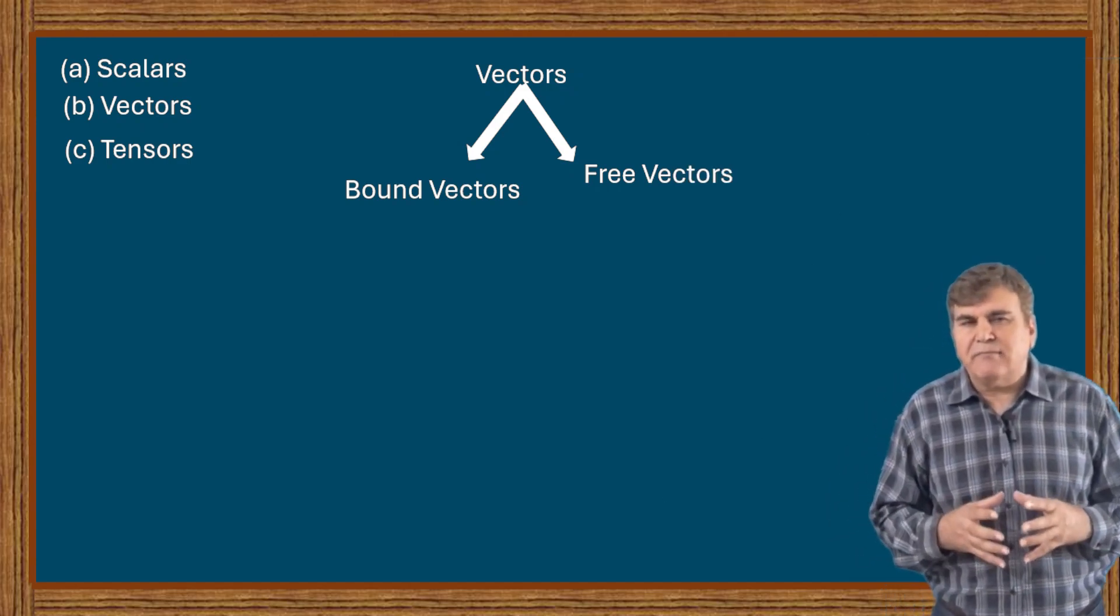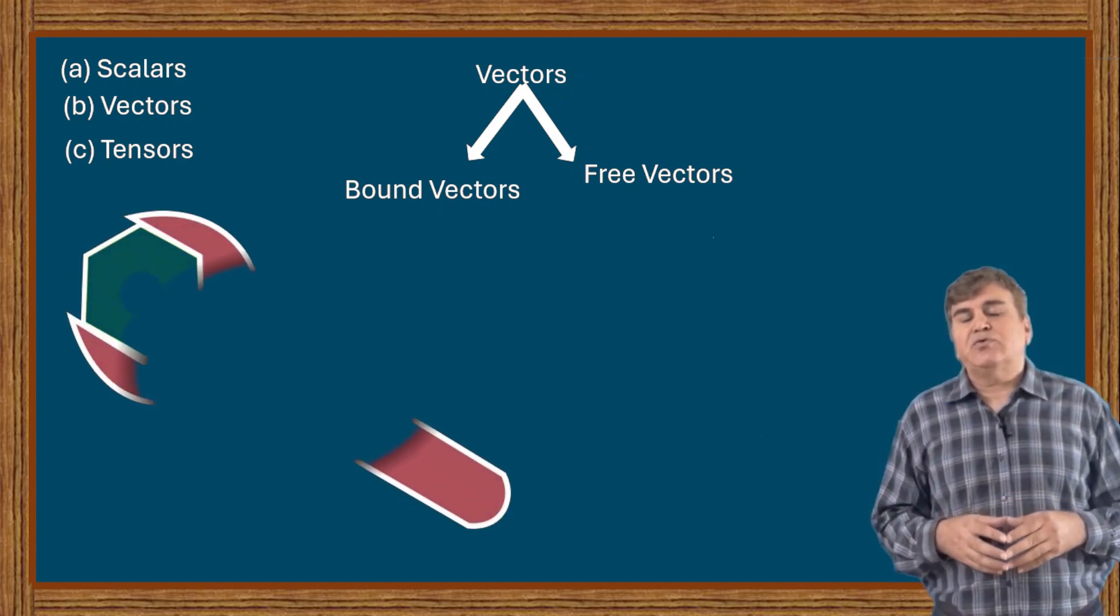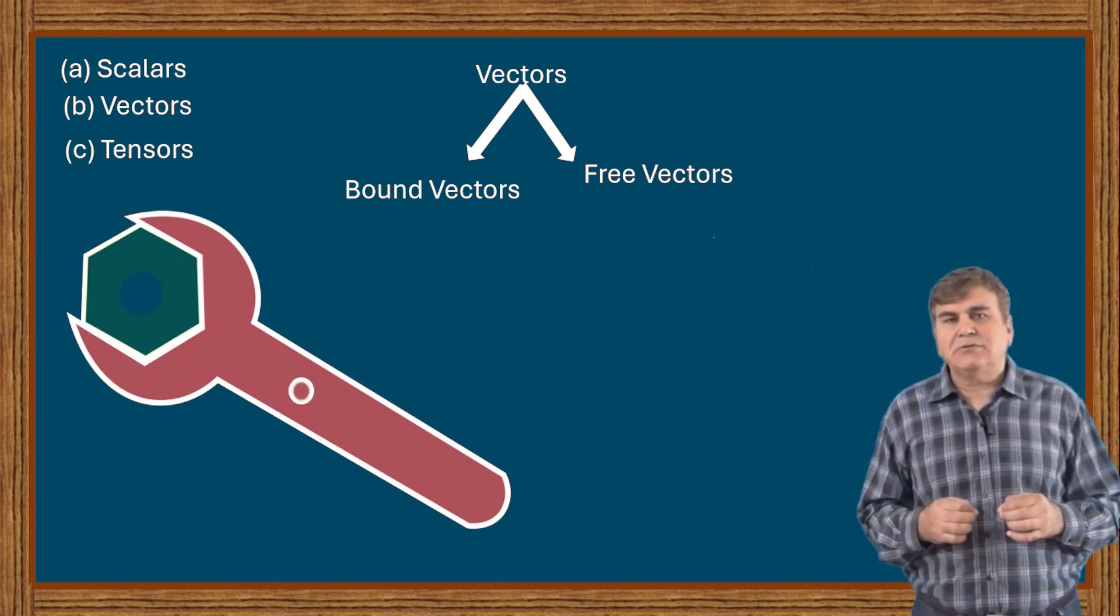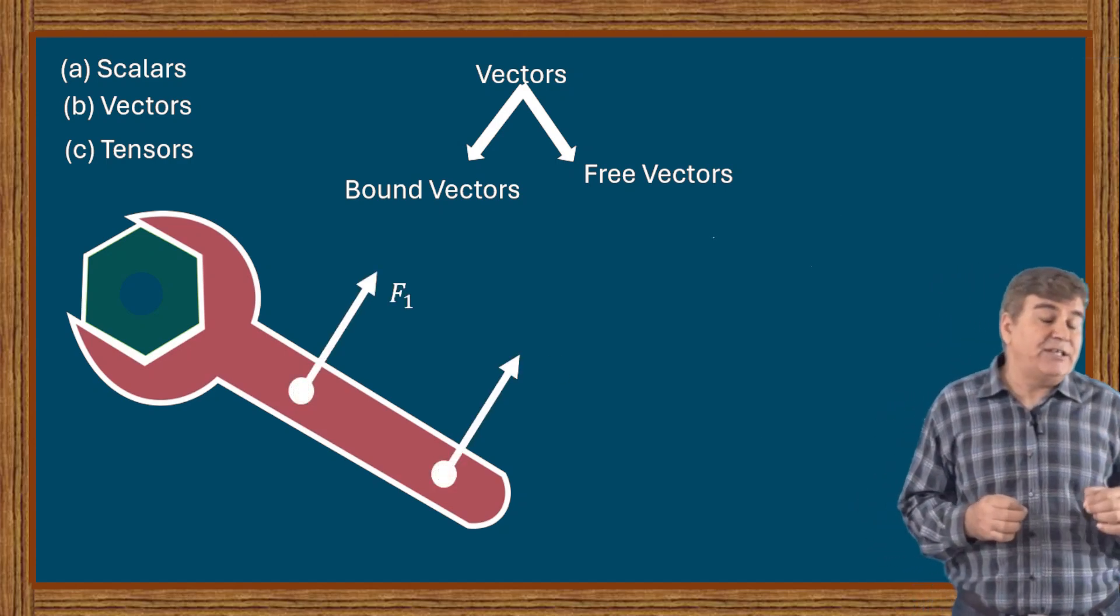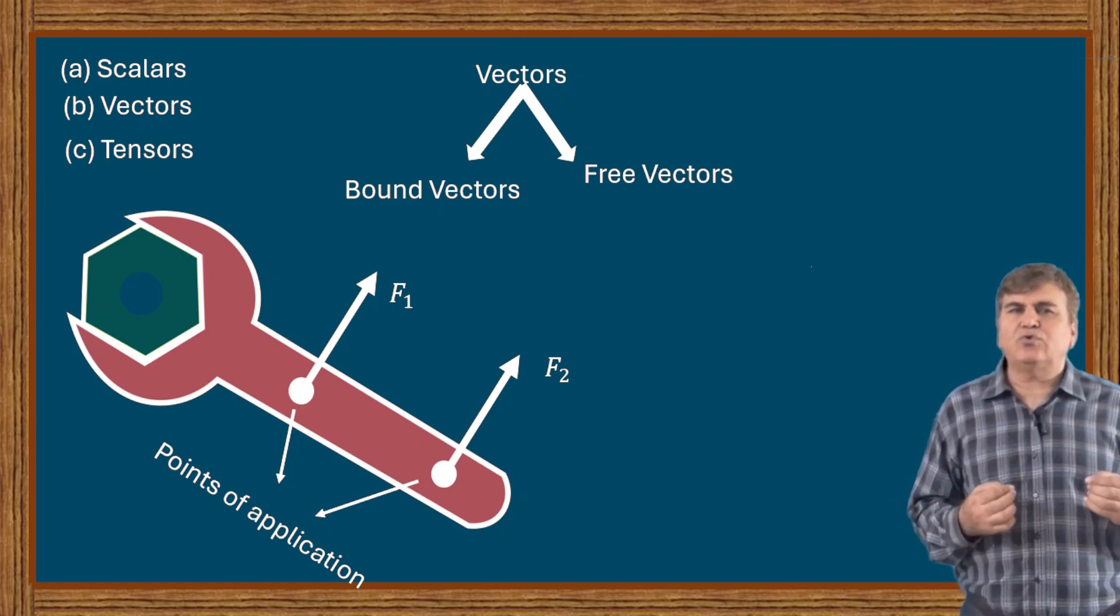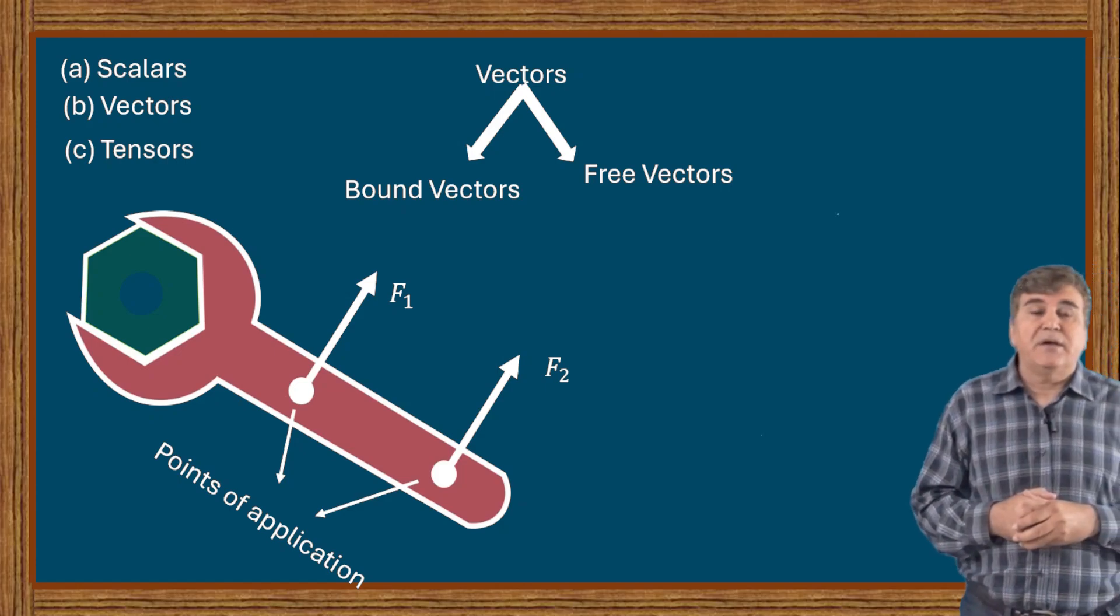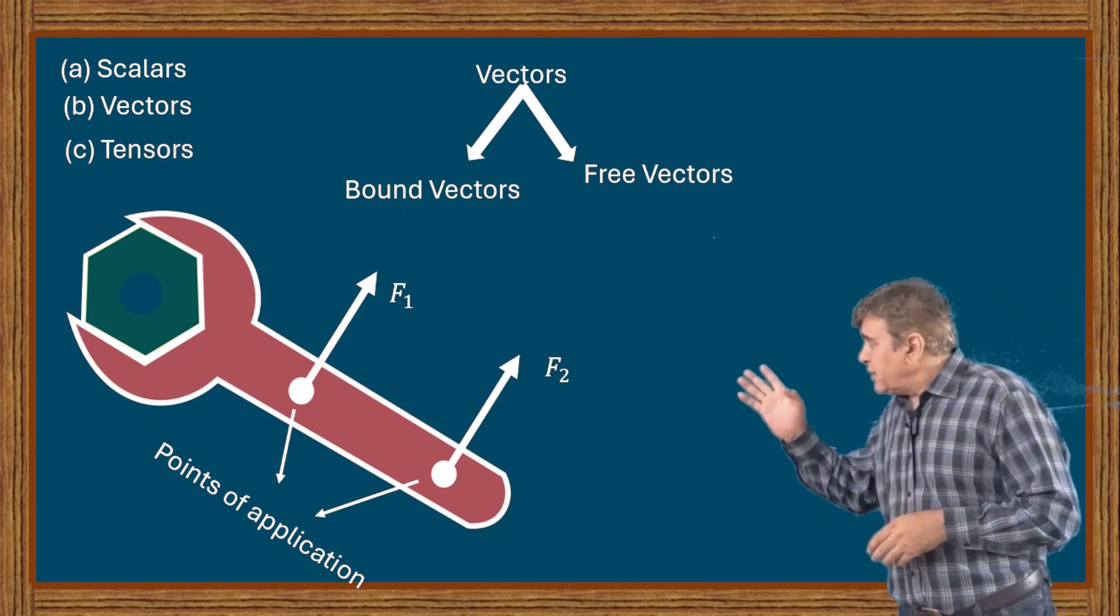Bound vectors are fixed in position, for example dealing with forces whose point of applications or the line of actions cannot be shifted. It is then necessary to think about those vectors as bound vectors. Consider the case shown in this figure.